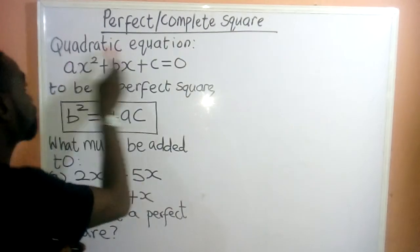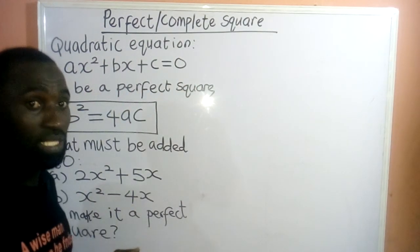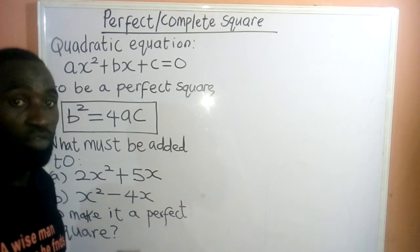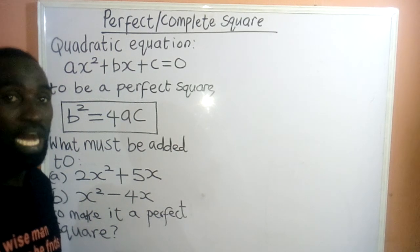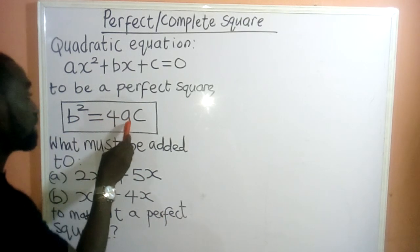Now, for this quadratic equation to be a perfect square, what is the formula that we are going to be applying to solve any question under perfect square? The formula is b² = 4ac.